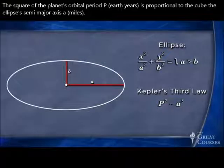The square of the planet's orbital period p, measured in Earth years, is proportional to the cube of the ellipse's semi-major axis a, measured in, say, miles.